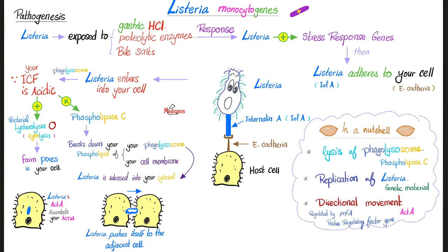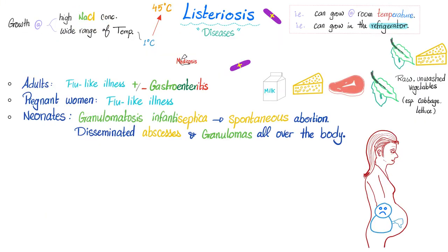Salt is not going to kill me. Cool temperature is not going to kill me, said Listeria monocytogenes. I can survive refrigeration. If you did not boil your food, if you did not cook it properly and thoroughly, I can grow in your food and cause many diseases, collectively known as Listeriosis.